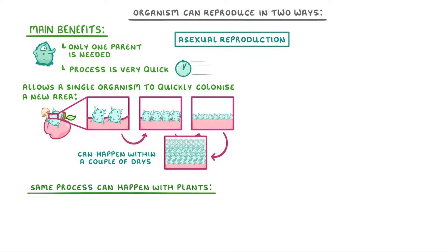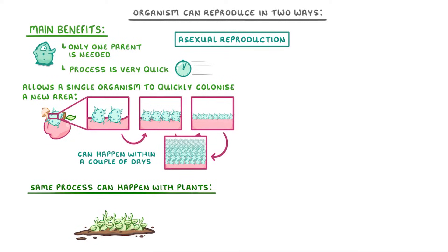The same process can happen with some plants. For example, if a single seed gets blown into a new habitat, then once it's grown, it might be able to reproduce asexually to produce loads of clones that colonise the whole area.